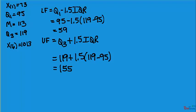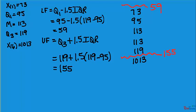Now go look at the data set. Any number that is smaller than the lower fence of 59 or any number that is bigger than the upper fence of 155 is an outlier. In this case, 1013 is the outlier.